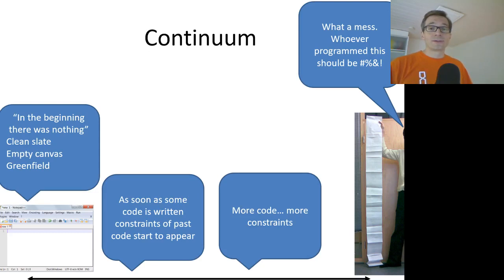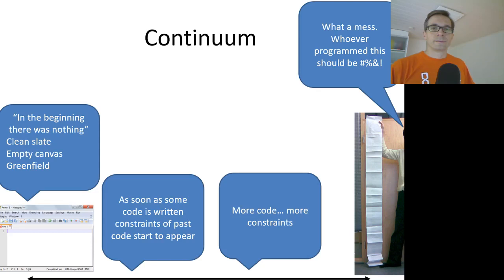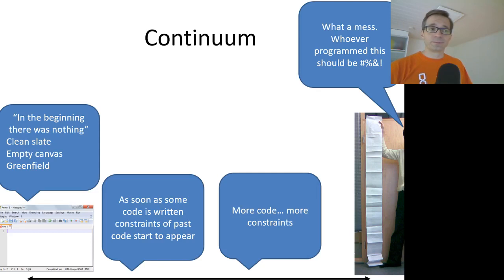Also, once you have started writing code you have already made choices, such as the choice of programming language. You might have also chosen the database you are using, or the operating system you are developing the software for. All of the choices you make become constraints and may come back to haunt you later.